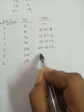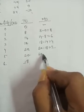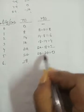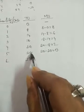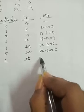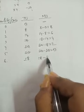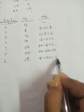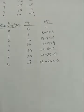Next, 20 minus 20 equals 0. Then 18 minus 20 equals minus 2.